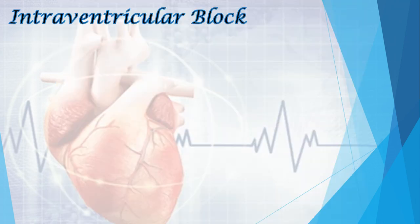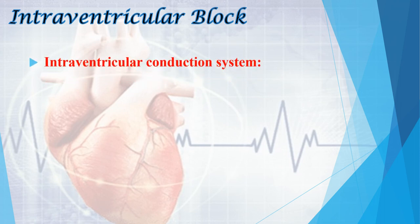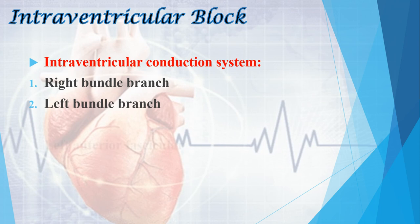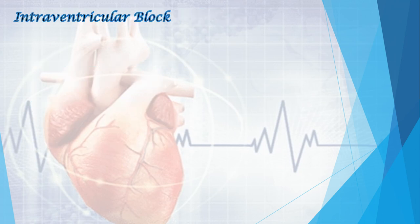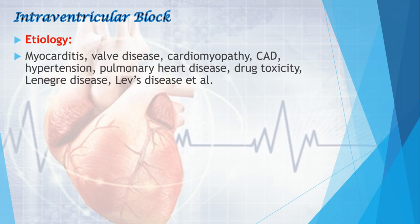The next category is intraventricular block. Intraventricular conduction system blocks include: right bundle branch block, left bundle branch block, left anterior fascicular block, and left posterior fascicular block. Etiologies include myocarditis, all kinds of cardiac diseases, drug toxicity, valve disease, cardiomyopathy, coronary disease, hypertension, pulmonary heart disease, Lenegre's disease, Lev's disease, etc.